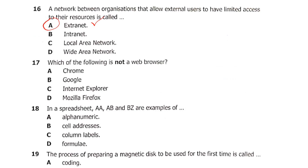Question 17: which of the following is NOT a web browser? Is it A: Chrome, B: Google, C: Internet Explorer, or D: Mozilla Firefox? Chrome, Internet Explorer, and Mozilla Firefox are all web browsers. Google is not a web browser — it is a search engine. So the answer is B.